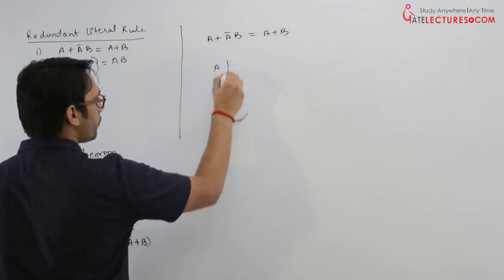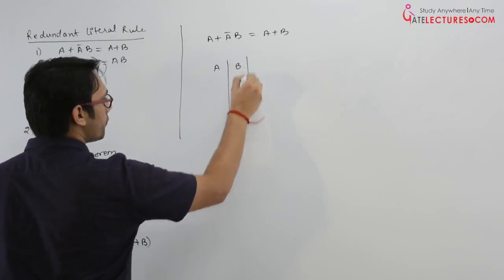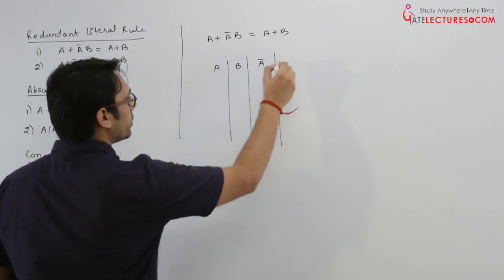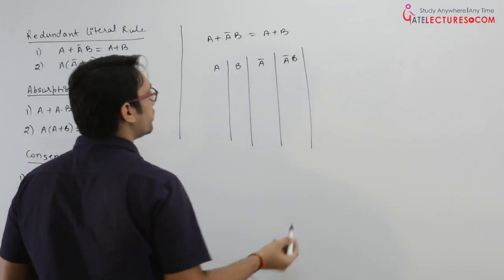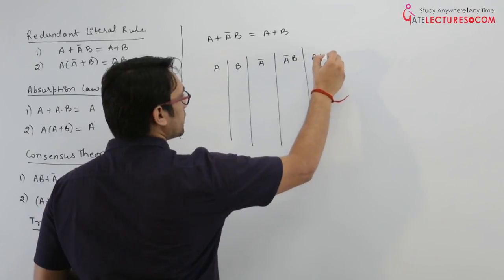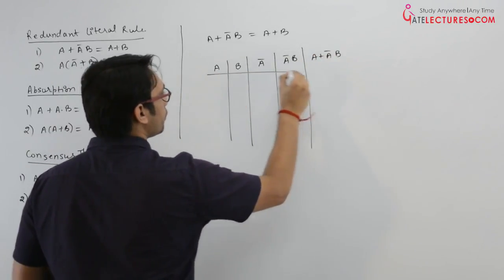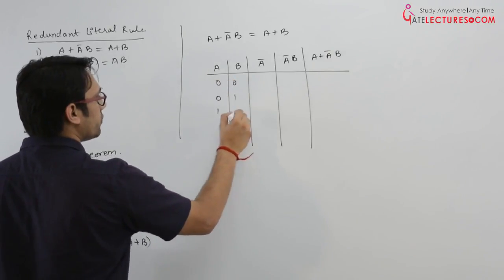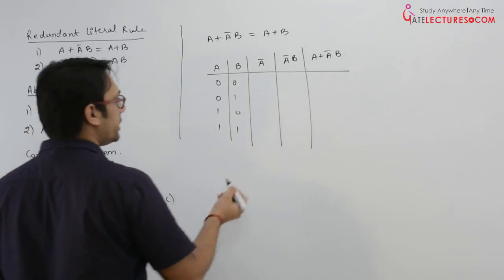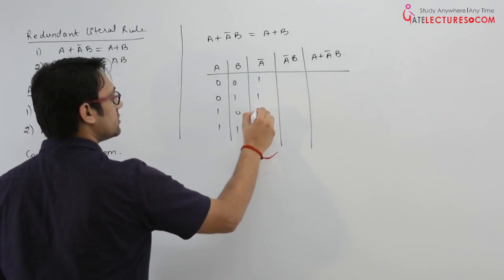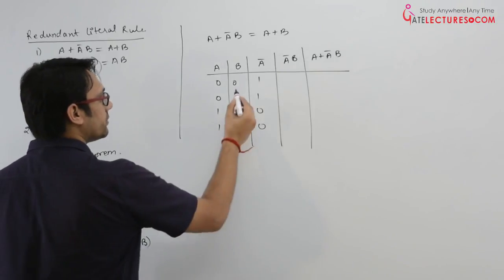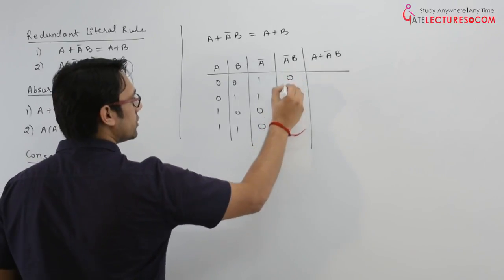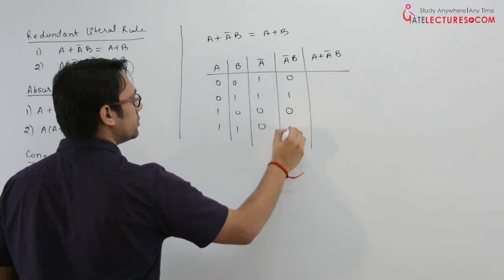Let us try to make a truth table. We have A and B. Let us try to find A complement. Then we will find A complement B. The combinations for A and B can be 00, 01, 10, and 11. So A complement can be written as 1, 1, 0, 0. A complement B — that means AND of A complement and B — will be 0, 1, 0, 0.